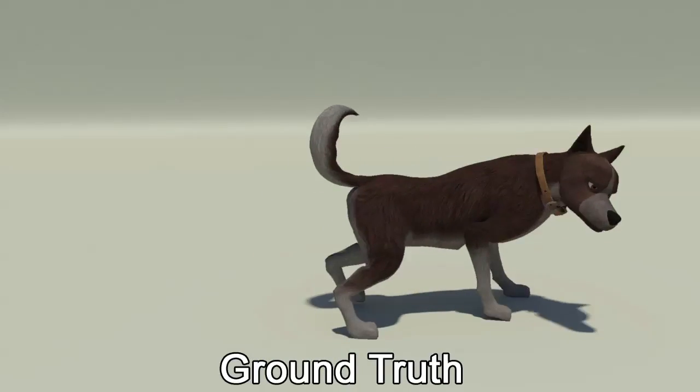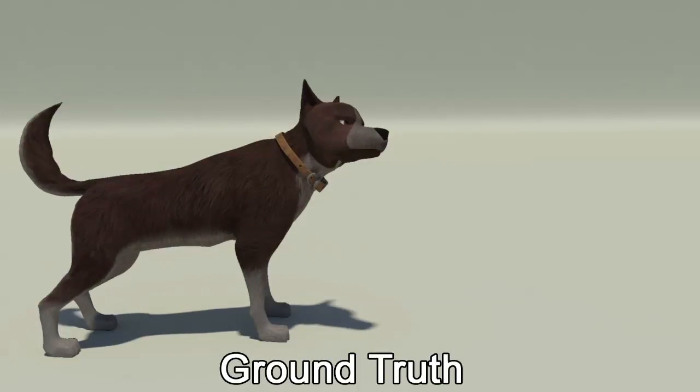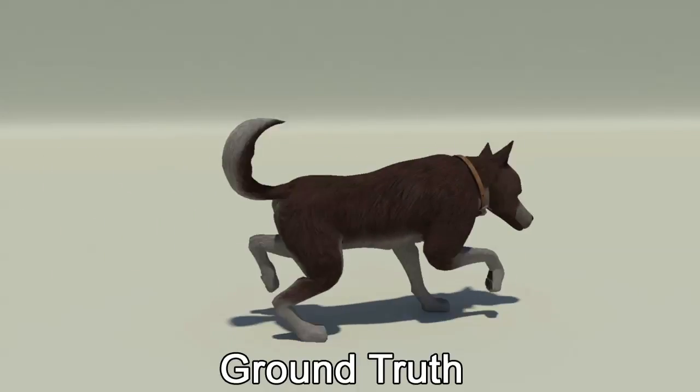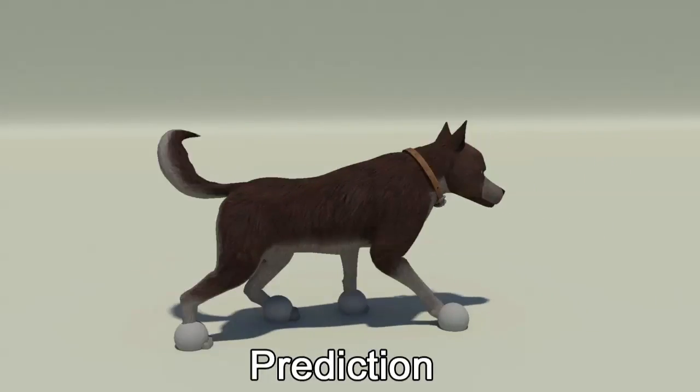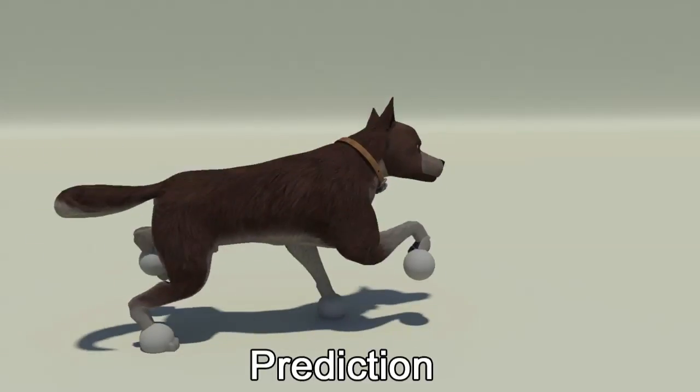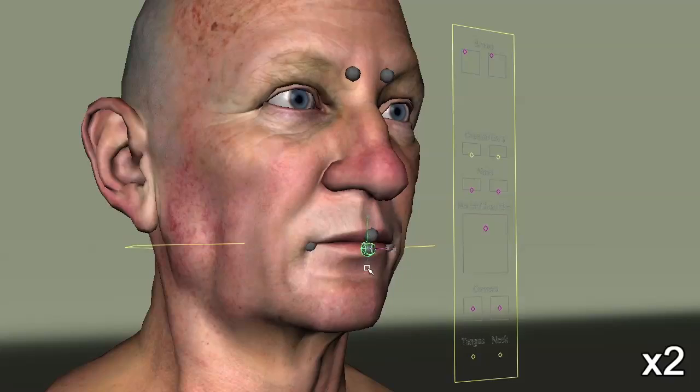Our approach generalises effectively, even for very limited input. Here we learn the relationship between rig controls and just four joints located at each of the character's feet. Our approach makes a sensible prediction of the character's whole pose.